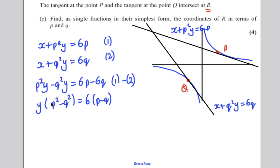Now, you know that p² - q² is the difference of two squares. So y(p - q)(p + q) = 6(p - q).